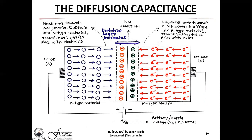In the forward bias diagram, you can see an extremely thin wall of negatively charged ions near the PN junction on the P-type material side, and similarly a thin wall of positively charged ions near the PN junction on the N-type material side. This gap is what we call the depletion layer or depletion region because it is completely devoid of any free charge carriers. Holes are the majority carriers in P-type and free to move; electrons are majority carriers in N-type and free to move. This region is called the depletion layer because it is completely depleted of any free carriers.